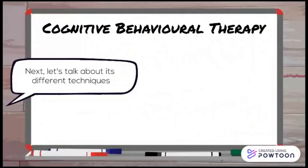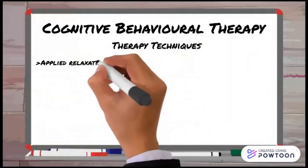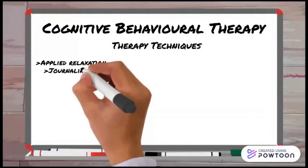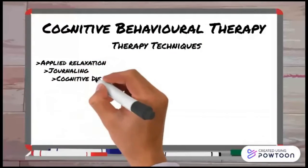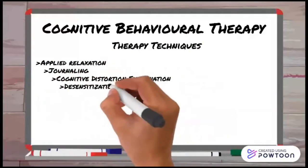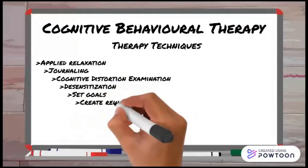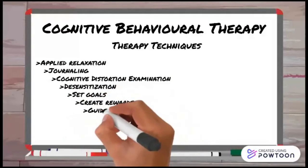Next, let's talk about the different techniques of cognitive behavioral therapy. These include applied relaxation, journaling, cognitive distortion examination, desensitization, setting goals, creating rewards, and guided discussion.